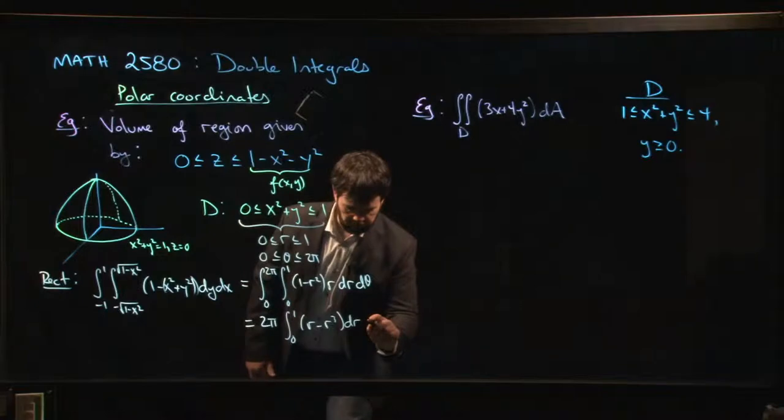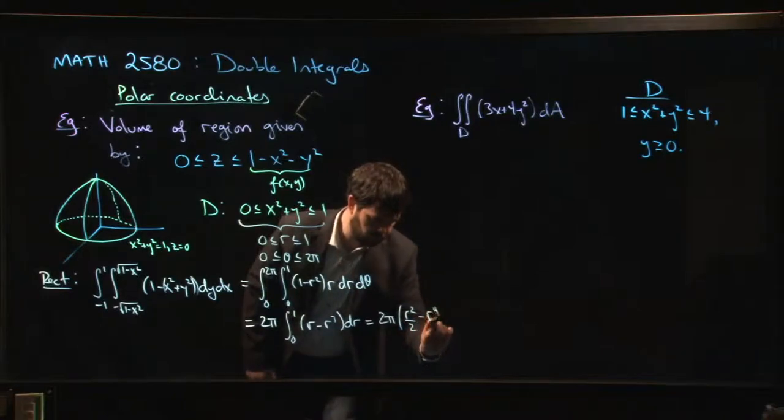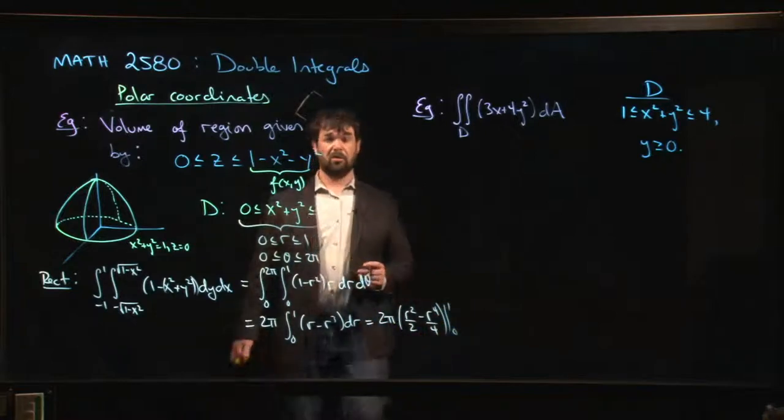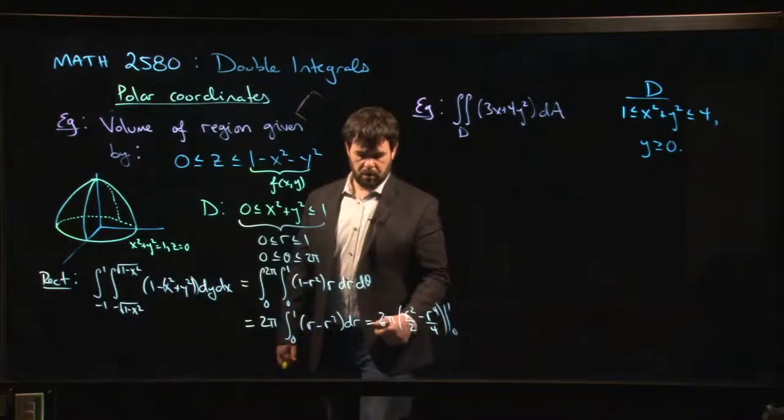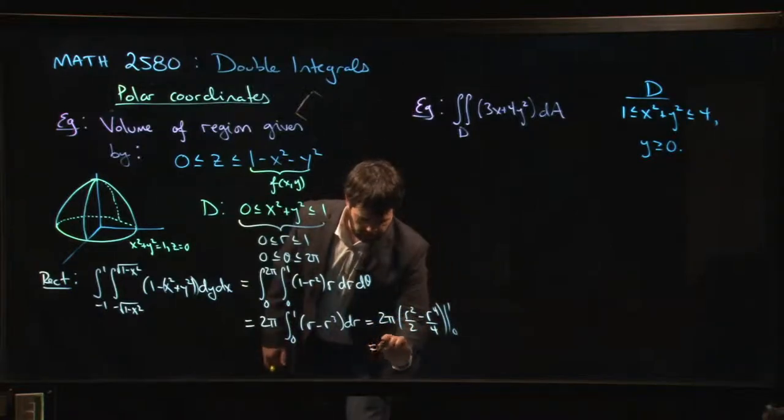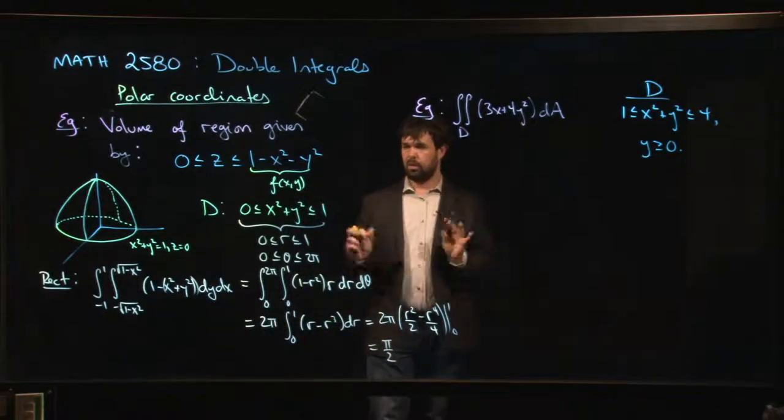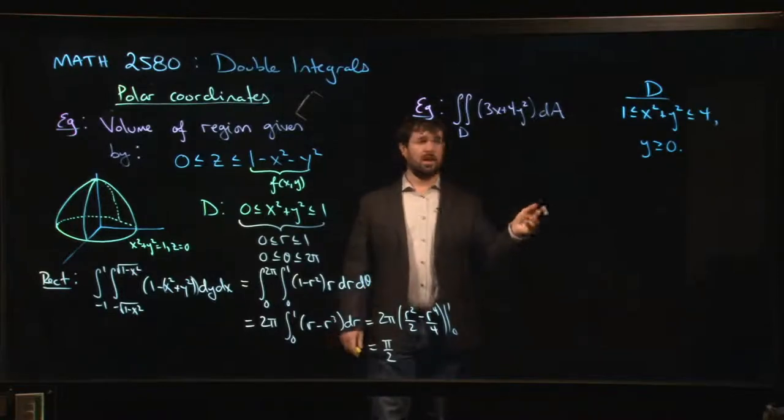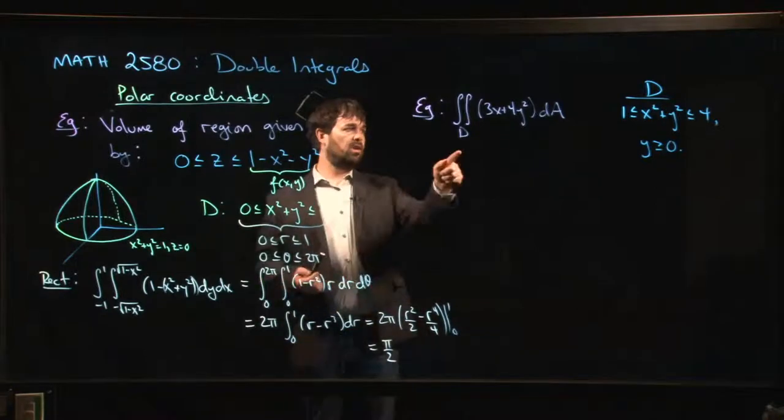We just need to find antiderivatives for a polynomial. So we have 2π times r squared over 2 minus r to the 4 over 4, we evaluate from 0 to 1. Half minus a quarter is a quarter times 2π. We get π over 2 for our integral. That's not so bad. In fact, that was easy enough that I think we have time to do the second one in the same video. We're only 4 minutes in. So let's move to this one.